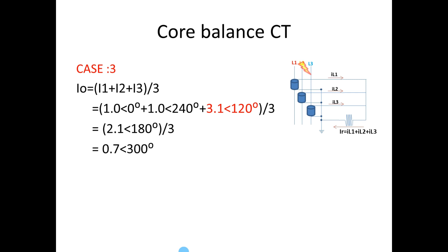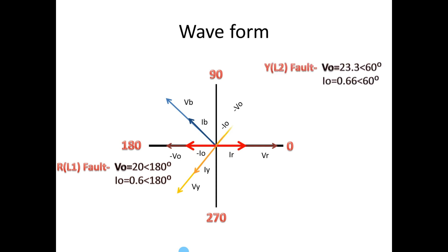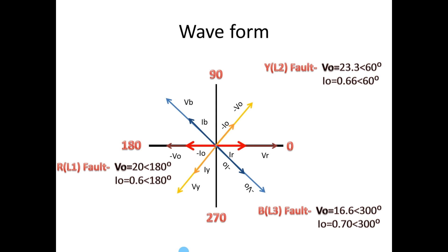Now I am going to use all the noted values of voltage and current and plot them in a power system phasor diagram. In a power system diagram, R phase starts at 0 degrees, Y phase starts at 240 degrees, and B phase starts at 120 degrees. For R phase fault I got 180 degrees, which is directly opposite to that phase. For Y phase fault I found 60 degrees, which is also directly opposite to its phase. Similarly, for B phase fault I got minus 60 degrees or 300 degrees, which is directly opposite to its main phasor angle. From this we clearly understand that the earth fault current will be opposite to the phasor current.